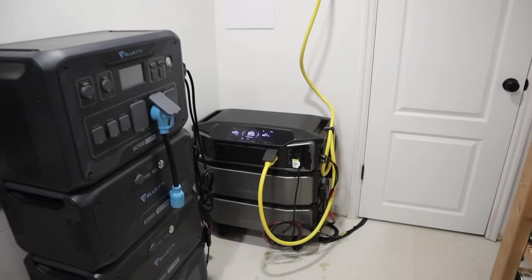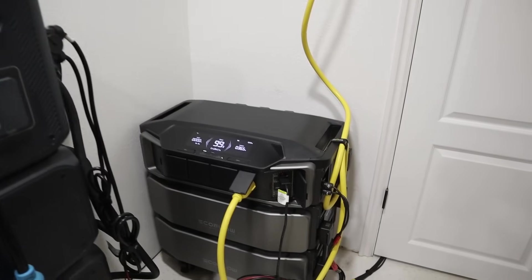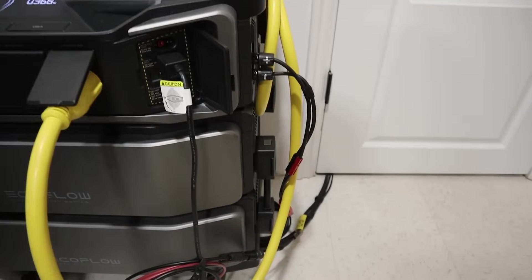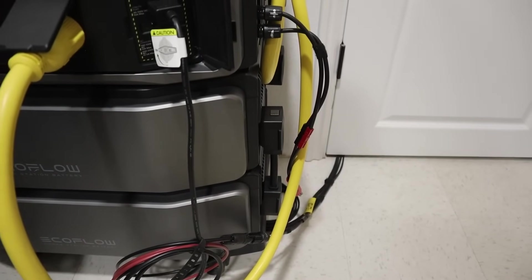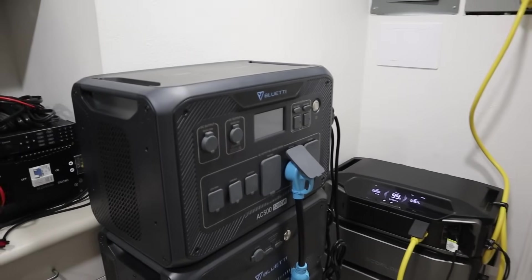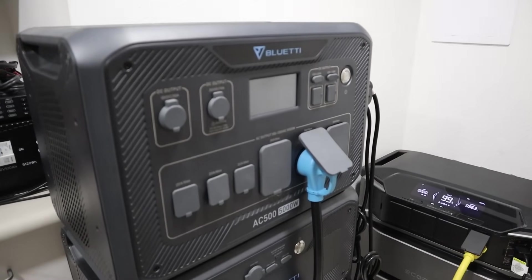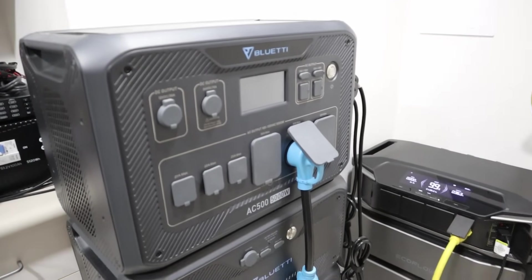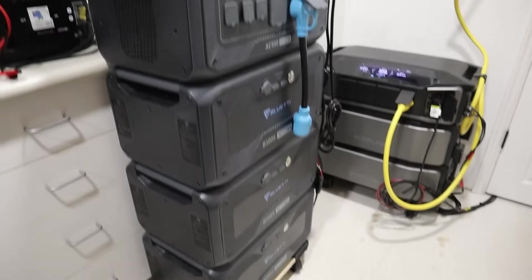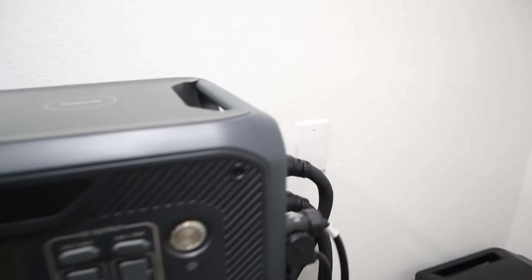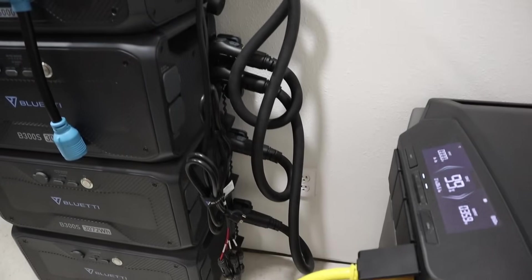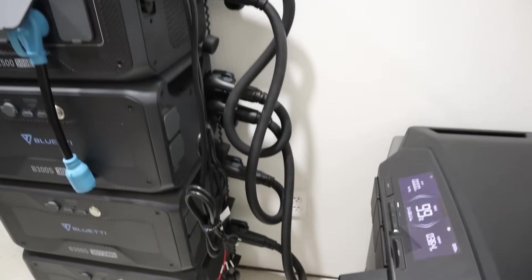One thing that I've noticed while testing the EcoFlow DPU is how compact it is compared to other power stations that have tested on the channel. And I really like these 90 degree adapters that go between the batteries and the inverter. If we compare the size of the DPU to the Bluetti AC500, this has a 5000 watt single phase output. And below that, I have three B300S batteries for three kilowatts each or nine kilowatt hours total.